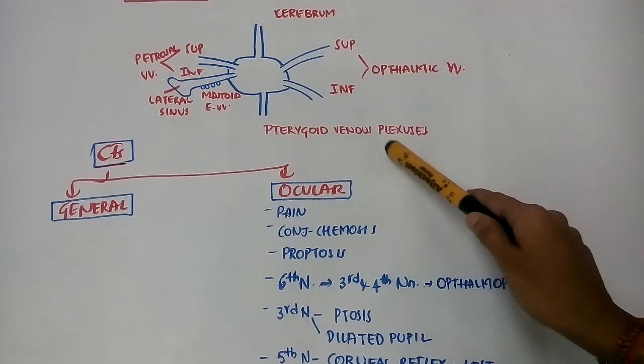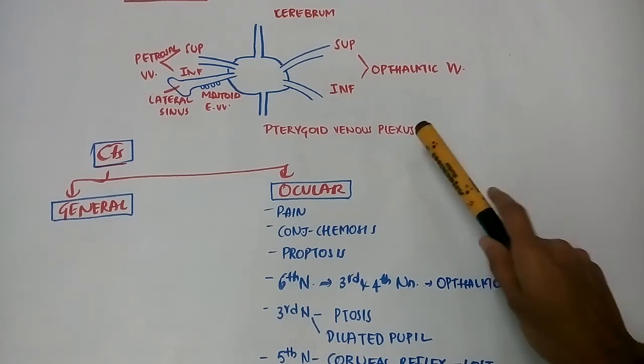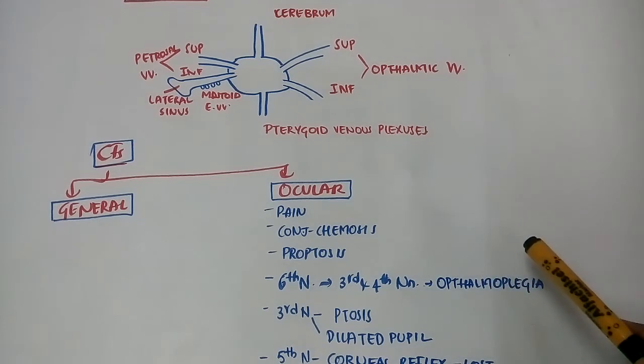Inferiorly, it communicates with the pterygoid venous plexus. Medially, it communicates with the contralateral cavernous sinus, so infection spreads from one side to the other.